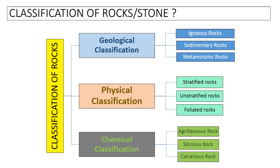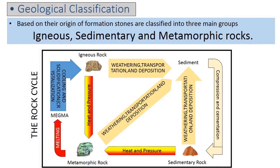Now let us see the geological classification of rocks. The cycle shown below is called the rock cycle, by which you can easily understand the types of geological rocks. The rock cycle is a continuous process through which old rocks are transformed into new ones. Rocks can be divided into three main groups: igneous, sedimentary, and metamorphic.